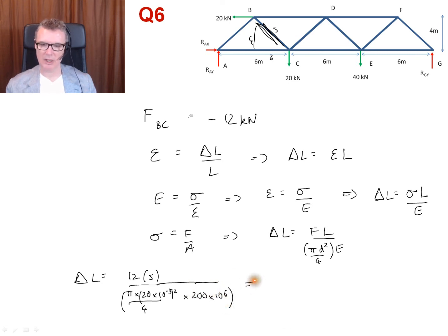Okay, I'm working in SI units. Put that all in my calculator. 12 times 5 divided by pi times 20 times 10 to the minus 3, squared, divided by 4 times 200 times 10 to the 9. That gives me 9.549 times 10 to the minus 4.